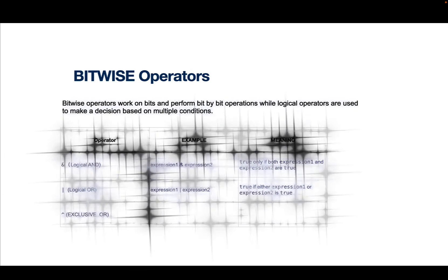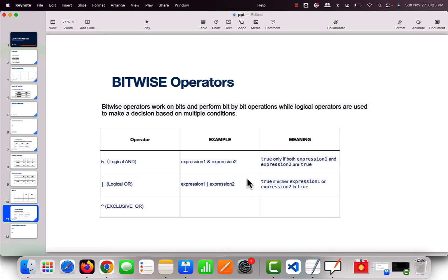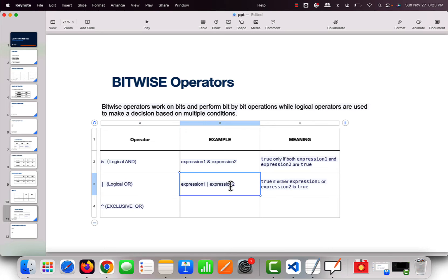Now let's talk about a variation: bitwise operators. Bitwise operators work on bits and perform bit-by-bit operations. There are three types: AND (&), OR (|), and exclusive OR (^). Logical operators and bitwise operators look similar — for AND, both expressions must be true; for OR, either must be true — but there is an inherent difference between them.